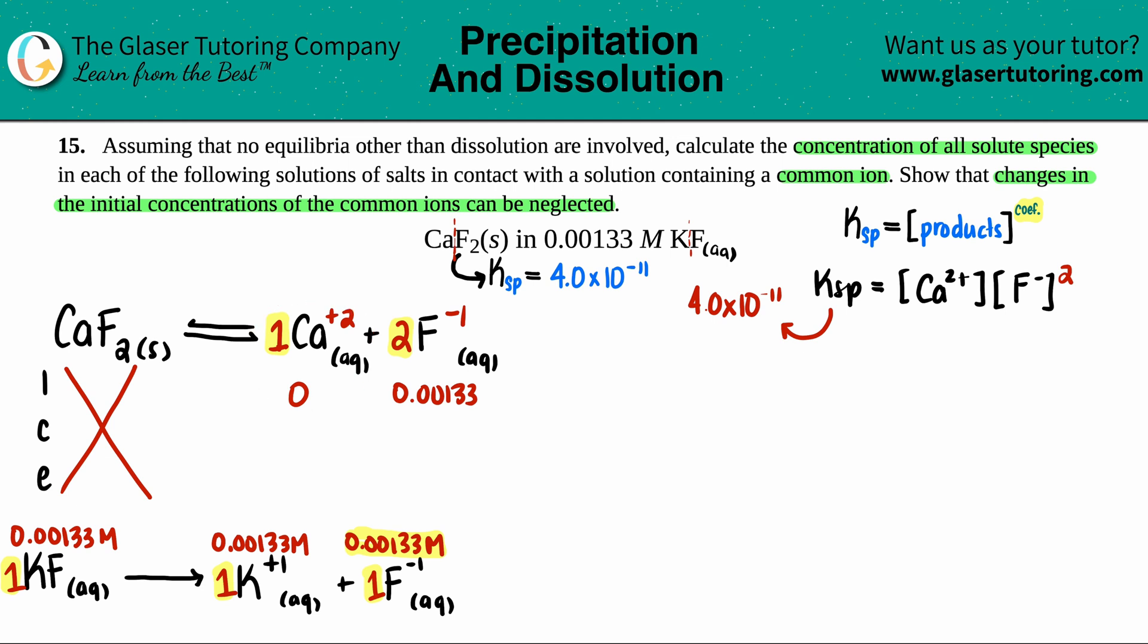Since I start off with zero, I can only go up from there. So the change, remember, this is plus x, because it's just plus 1x. That's the variable that we don't know. And then this would be plus 2x, because it's a 1 to 2 ratio. And now equilibrium, we're just plugging these in, combining them. So zero plus x is just x. 0.00133 plus 2x is 0.00133 plus 2x.